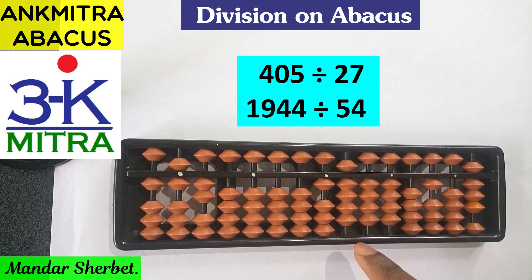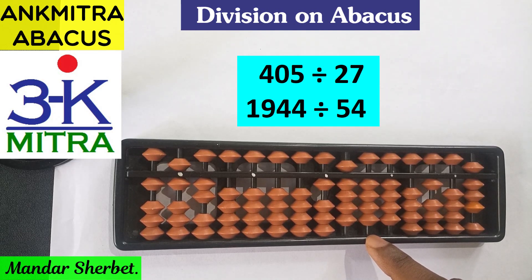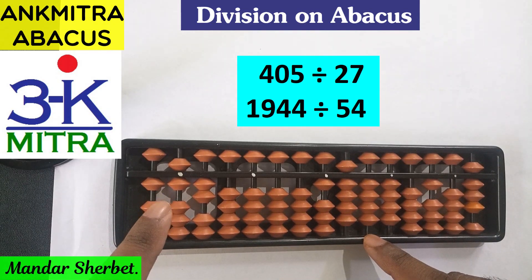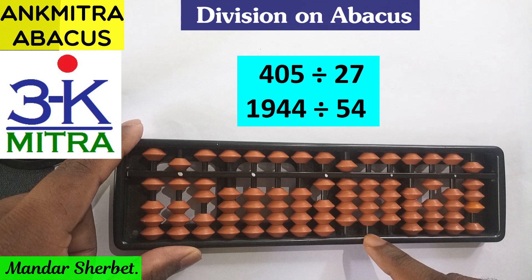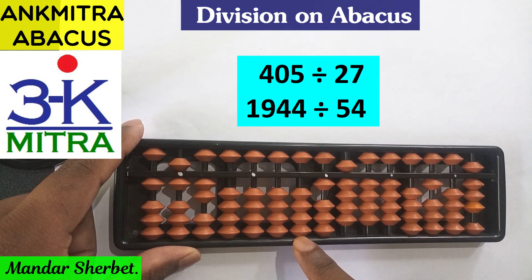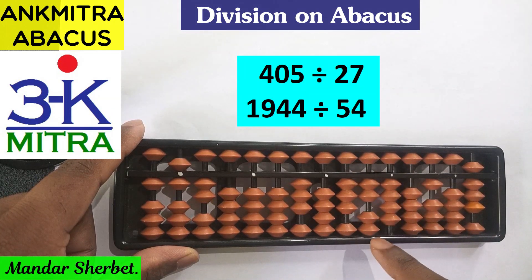We start the division process. Since the divisor is a two-digit number, we consider the first two digits of the question set. The first two digits form 19, which is smaller than our divisor 54, so we cannot place anything on the third rod of the answer set. Moving one rod further, the number up to this rod is 194. We can subtract 162, which is three times 54, from 194. So we place 3 on the tens-place rod of the answer set and subtract 162 from 194.